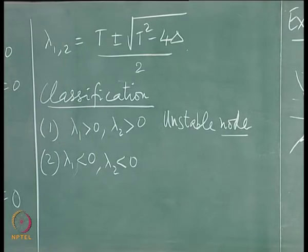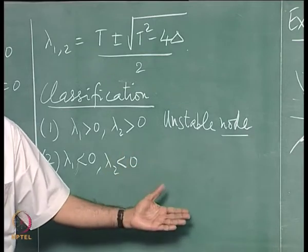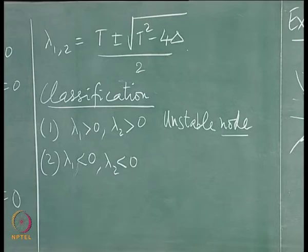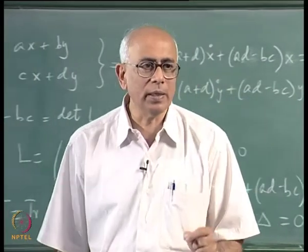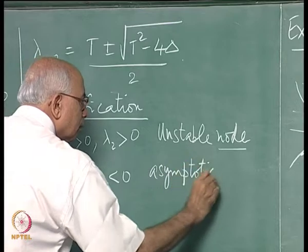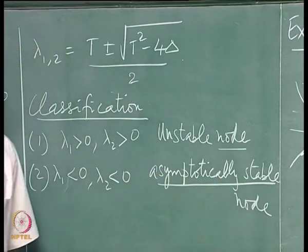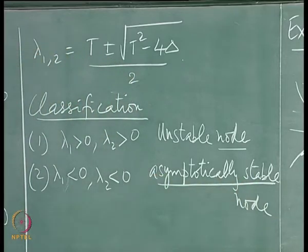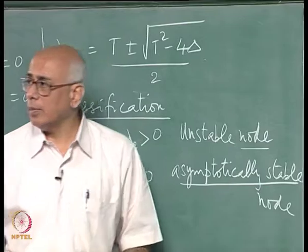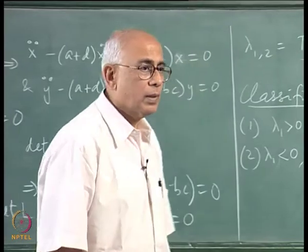With both eigenvalues negative, all arrows would be reversed — you would have damped exponentials. As t tends to infinity, wherever you start you flow into the critical point at the origin asymptotically. I would call this an asymptotically stable node, being careful about the definition of stability — trajectories inevitably fall into the critical point as t → ∞.